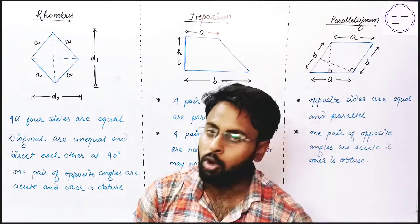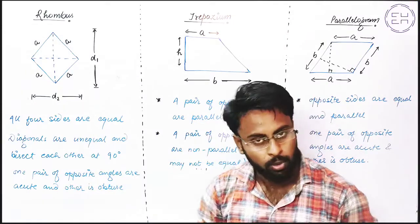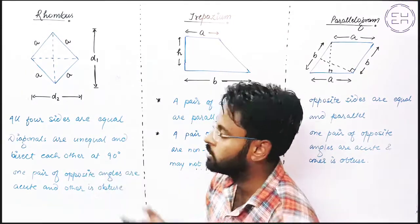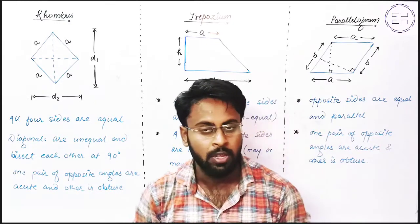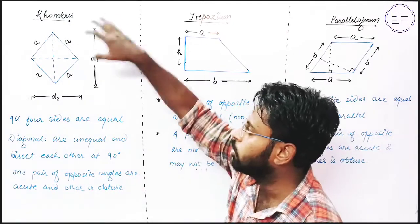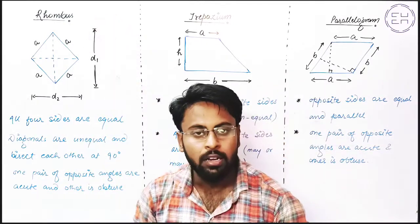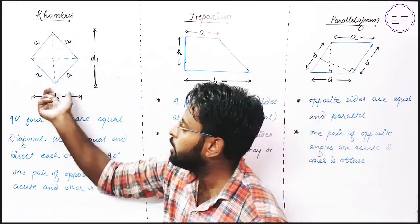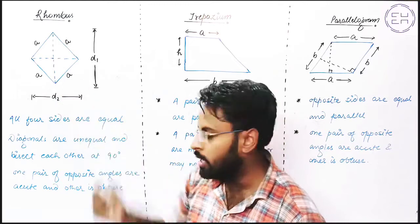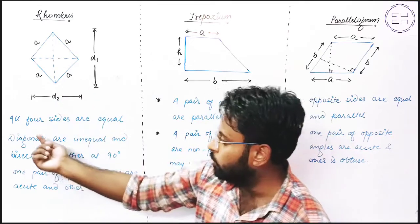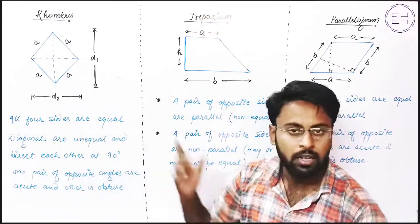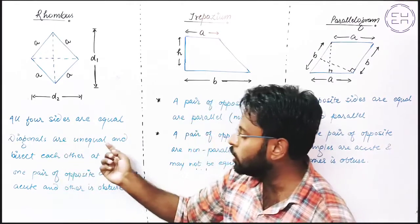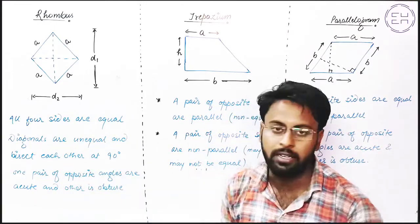Let us start our topic with Rhombus. As you can see, the figure of Rhombus has been made in front of you and its properties have been listed. First, what is a Rhombus? It is a quadrilateral bounded by four sides having equal sides. The first point is: all four sides are equal. The second property: diagonals are unequal and bisect each other at 90 degrees.